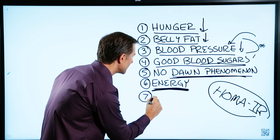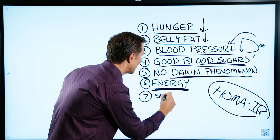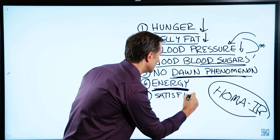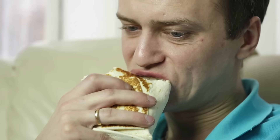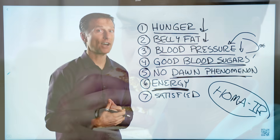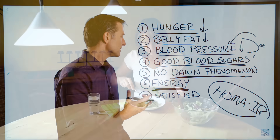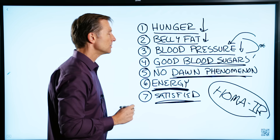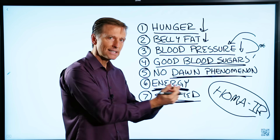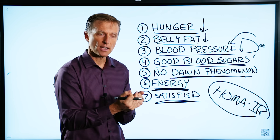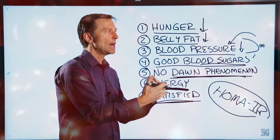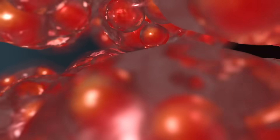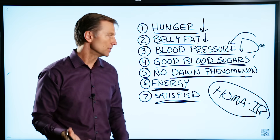I'm going to add number seven: you're satisfied when you eat. Maybe before when you had insulin resistance, you'd eat and just not feel fulfilled — now you do. Of course, you're going to have to eat the right foods. But the feeling of being satisfied after you eat tells me that the nutrition is going into the cell. That means you no longer have that resistance, because with insulin resistance that blocks the nutrients going into the cell — it's hard to feel satisfied with food.